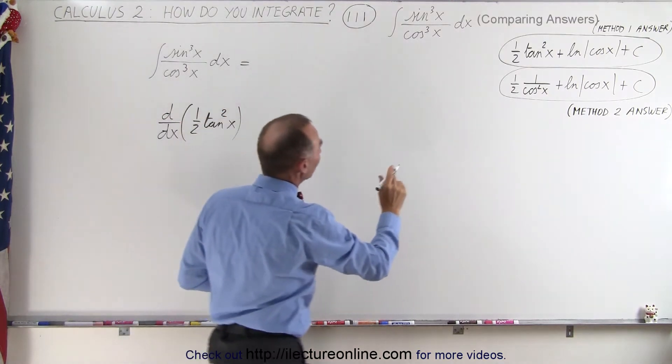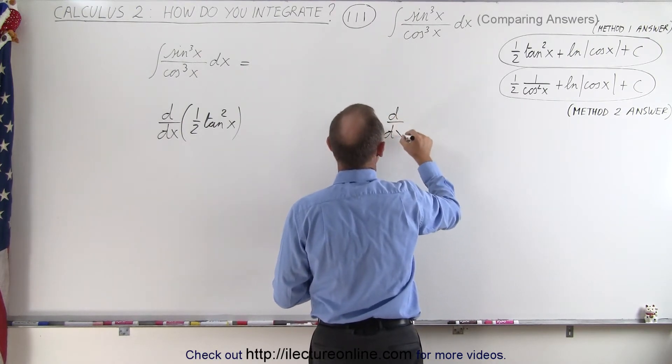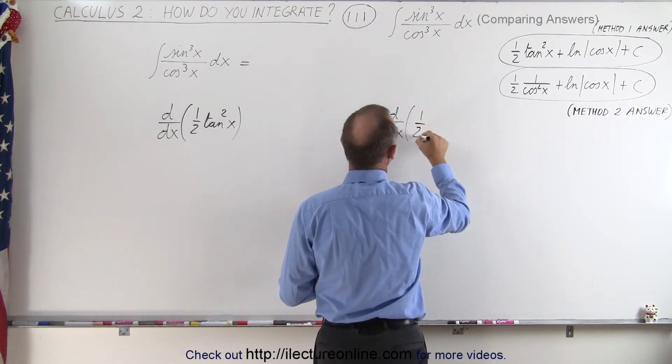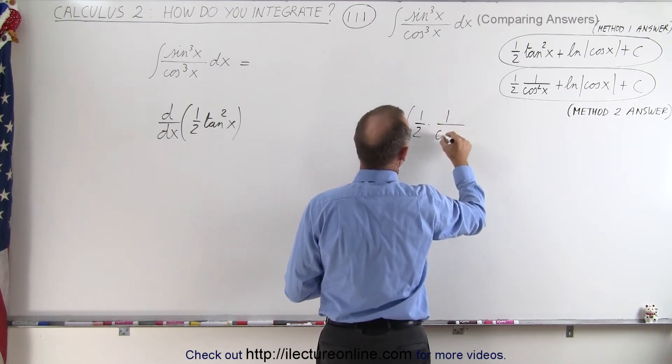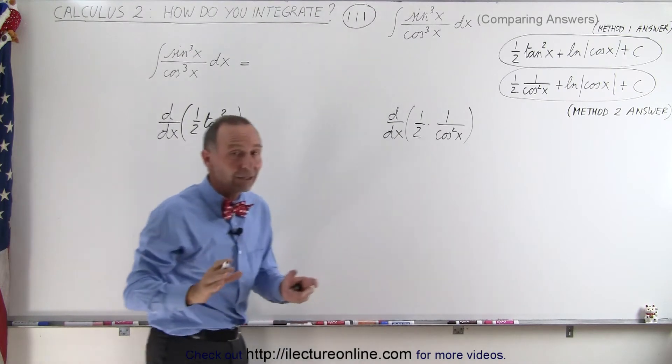And then we're going to do the same thing. We're going to take the d dx the derivative with respect to x of one half times one over the cosine squared of x and see if we do indeed get the same result.